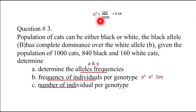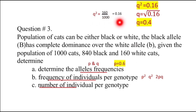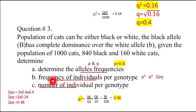As P + Q = 1, P = 1 − 0.4 = 0.6. For genotype frequencies: Q² = 0.16 (already calculated), P² = 0.6 × 0.6 = 0.36, and 2PQ = 2 × 0.6 × 0.4 = 0.48.